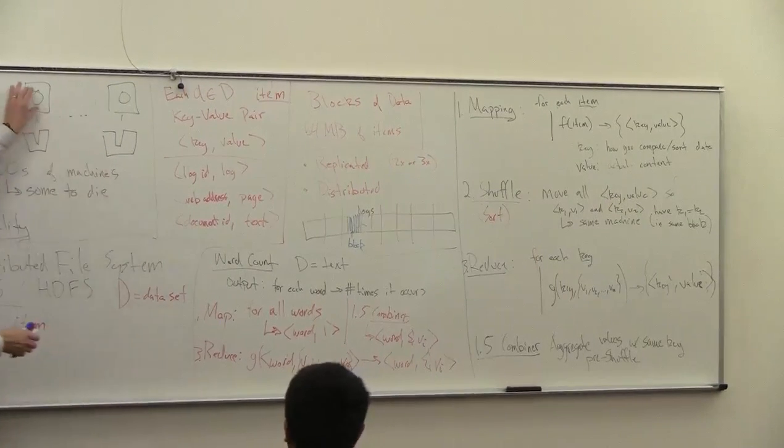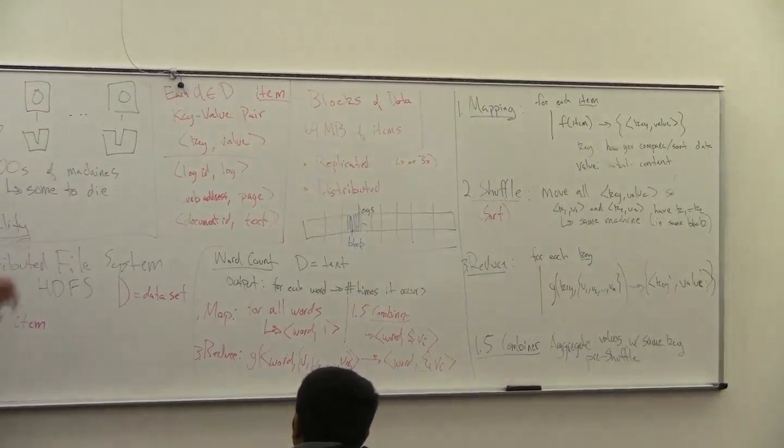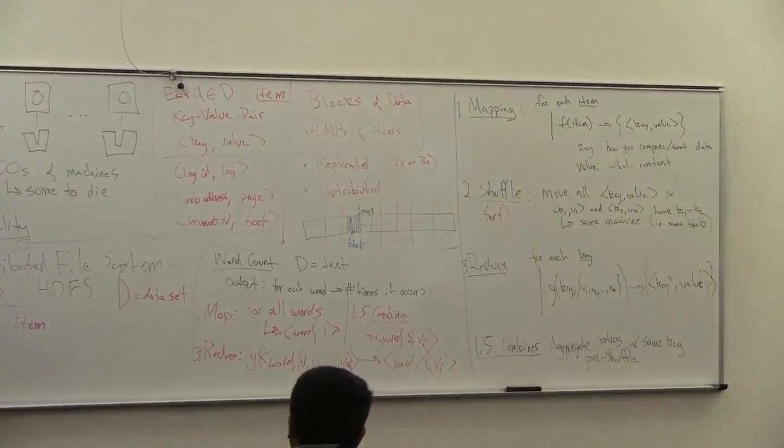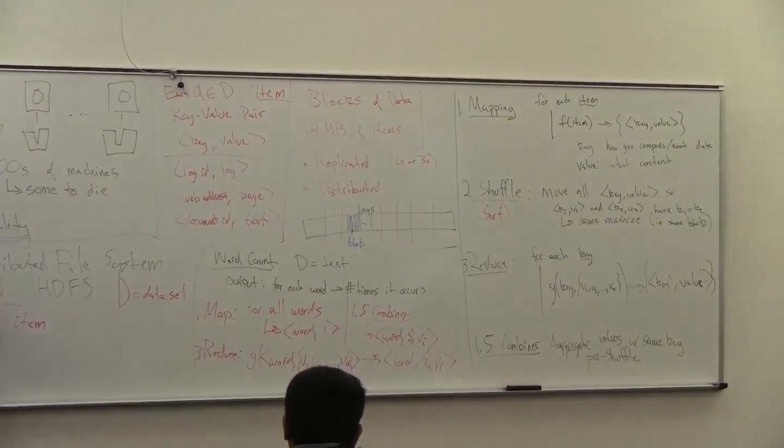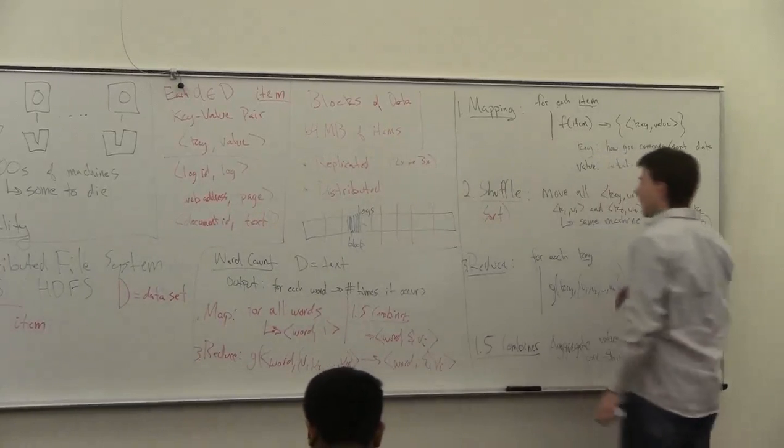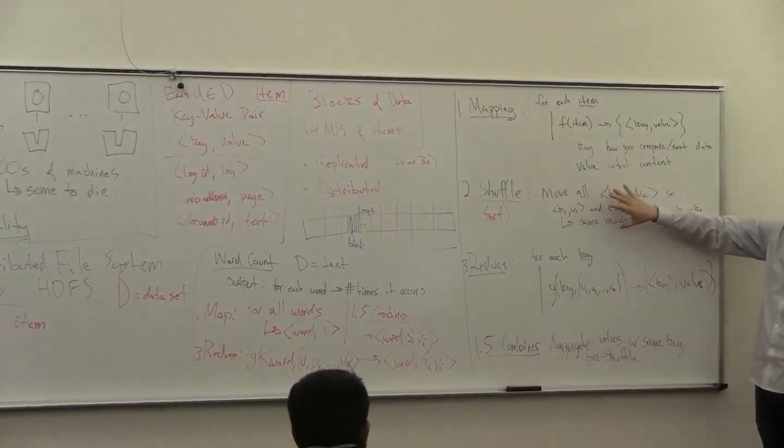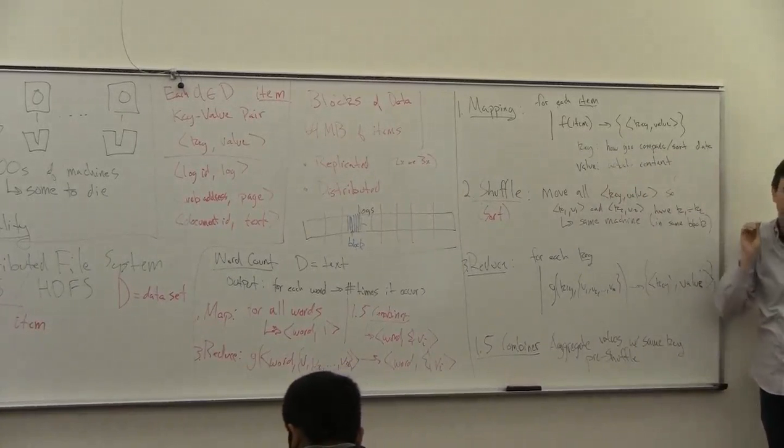These were all on the same machine. So before you sent them off in the shuffle step, you want to send as little information as possible. So the most expensive part, time-wise, is in moving the data in the shuffle step. You want to do this as little as possible, send as little data as possible here.